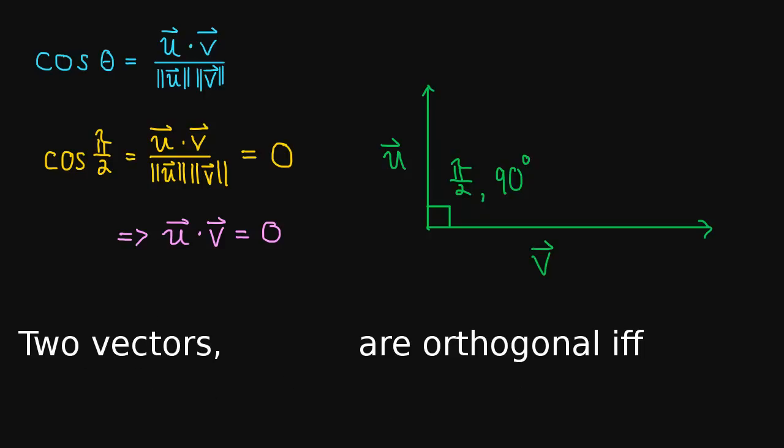So now we have a definition of orthogonal. Two vectors are orthogonal. Well, let me write this. Two vectors u and v are orthogonal if and only if—if you've never seen this before, this is shorthand notation for if and only if—two vectors u and v are orthogonal if and only if u dot v is equal to 0. So now we have a nice easy way to test if two vectors are orthogonal.